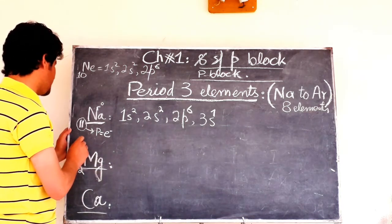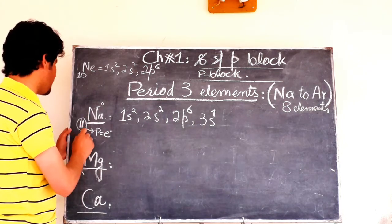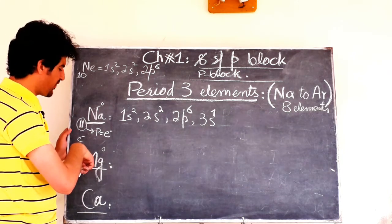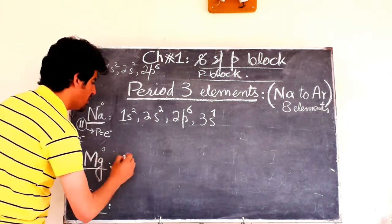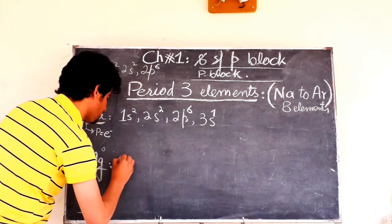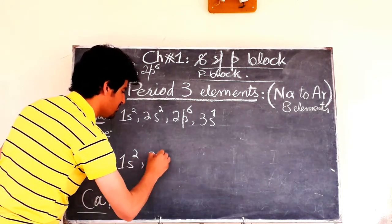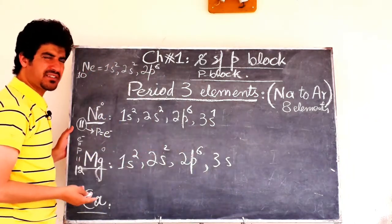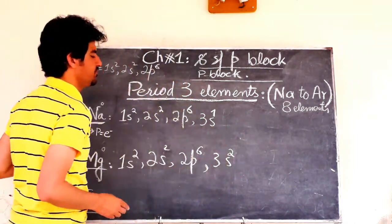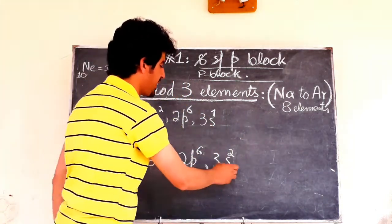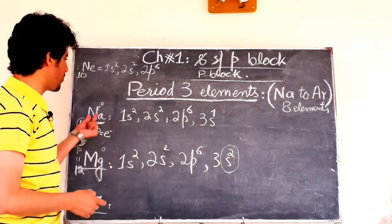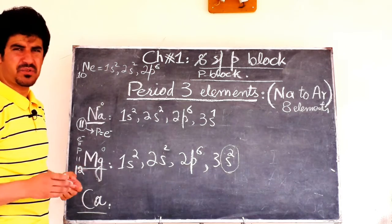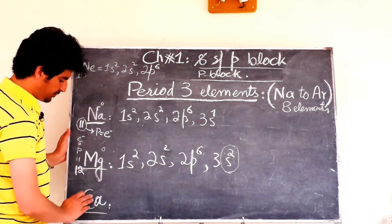For magnesium, atomic number is 12, so it has 12 electrons. Configuration: 1s², 2s², 2p⁶ — 10 electrons — then 3s². The second electron fills the 3s sub-shell, completing it. So magnesium's configuration is 1s², 2s², 2p⁶, 3s².